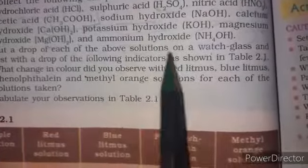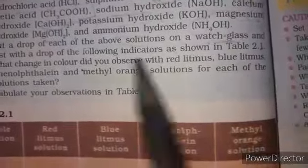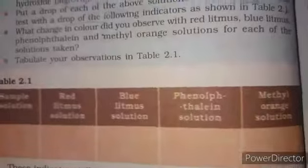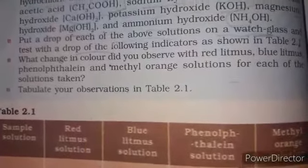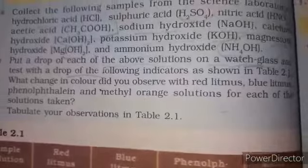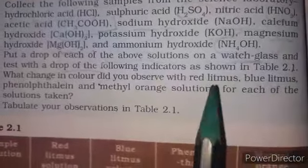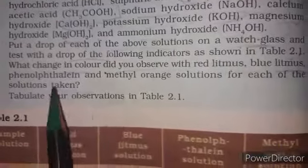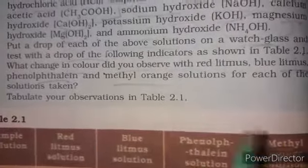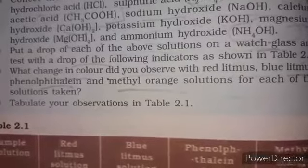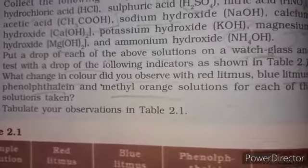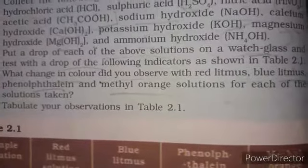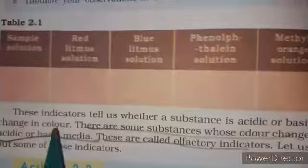Put a drop of each solution on a watch glass, then test with various indicators. I will send another video showing the colored changes properly. Observe changes with red litmus, blue litmus, phenolphthalein, methyl orange, and red cabbage juice indicators on both acids and bases.